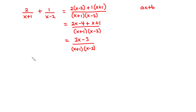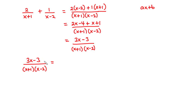For this rational function, 3x minus 3 divided by x plus 1 times x minus 2, the denominator is made up of linear factors of the form ax plus b. So the numerator of each factor — x plus 1 and x minus 2 — is going to be a constant. We can resolve this as A over x plus 1 plus B over x minus 2, where A and B are constants.